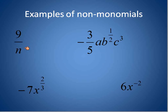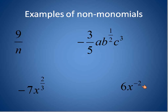Here are some examples of non-monomials. Any variable in the denominator is not going to work, because when we have an N in the denominator, we can move that up and it would become N to the power of negative 1. We can't have a negative exponent — that's not a monomial. This one here: the negative 3 fifths is fine, A is fine, C to the power of 3 is fine, but B to the power of one half makes this not a monomial. You can't have a fraction or a negative number as your exponent. X to the power of 2 thirds does not work.